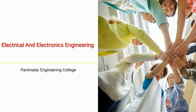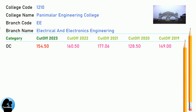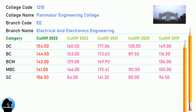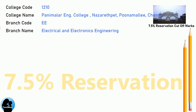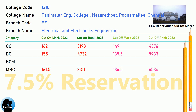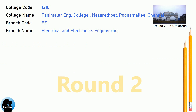DNA Cut-off for Panimalar Engineering College in Electrical and Electronics Engineering. DNA 7.5 Reservation Cut-off for Panimalar Engineering College in Electrical and Electronics Engineering. DNA Round 2 Cut-off for Panimalar Engineering College in Electrical and Electronics Engineering.